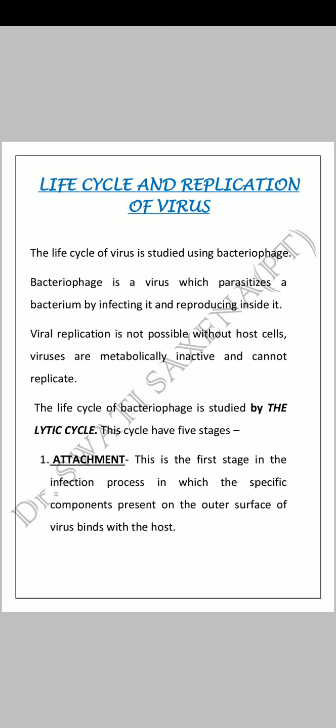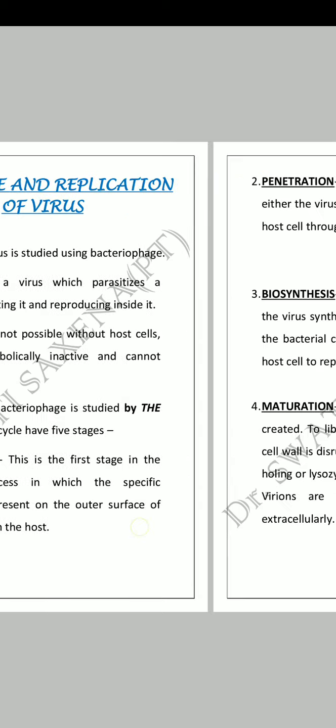Bacteria یا کوئی بھی living cell ملنے کے بعد virus active ہو جاتا ہے۔ The life cycle of bacteriophage is studied by the lytic cycle. This cycle has 5 stages. The first is attachment - this is the first stage in the infection process in which the specific components present on the outer surface of the virus bind with the host. Virus bacteria کو attach کرتا ہے اور اپنے specific enzymes use کرکے bacteria کی outer surface کو توڑنے لگتا ہے تاکہ اندر جا سکے۔